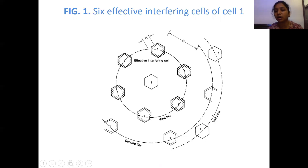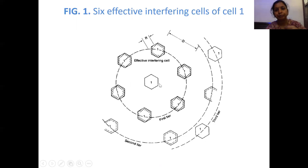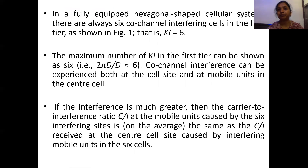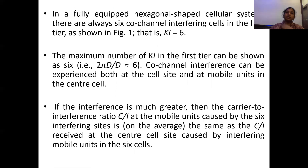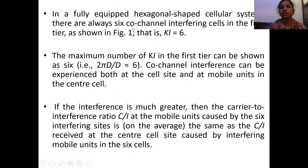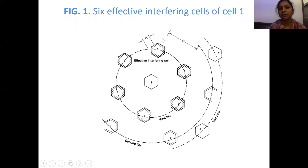Depending upon the distance, we call them the second, third, and fourth tier. If you take cell one, how many cells are there in the first tier? There are six cells: one, two, three, four, five, six. So here D is a function of KI. In a hexagonal shaped cellular system, there are always six co-channel interference cells in the first tier, as shown in the figure. The maximum number of KI in the first tier is six, where 2 times D/D equals six.